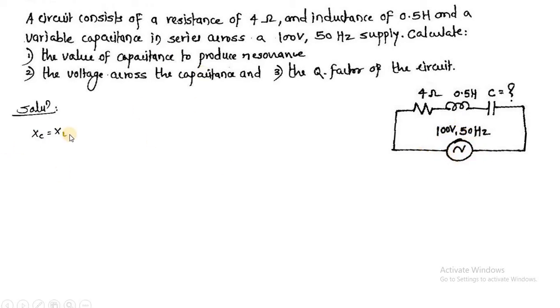As this circuit is going to operate at resonance condition, your XC is going to be equal to XL. What you are supposed to find out? You are supposed to find out C. 1 upon 2πFC is equal to 2πFL. Where frequency is known to you, that is 50 hertz. L value is known to you, that is 0.5 henry. So only C is unknown to you.